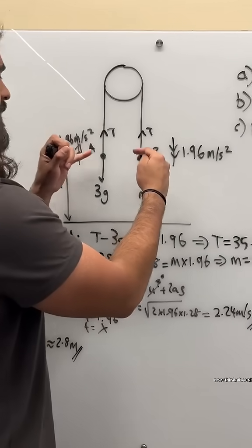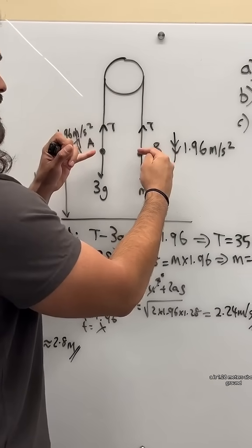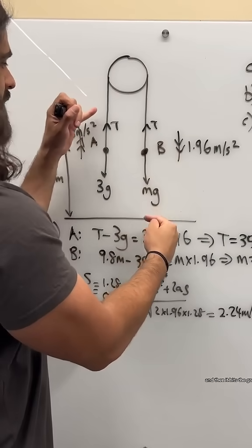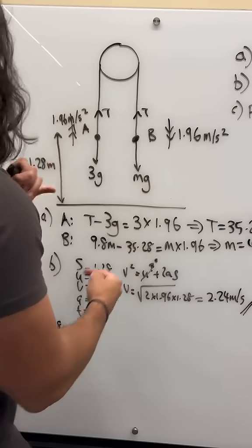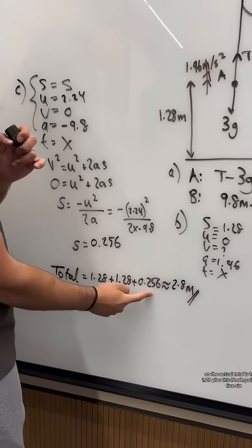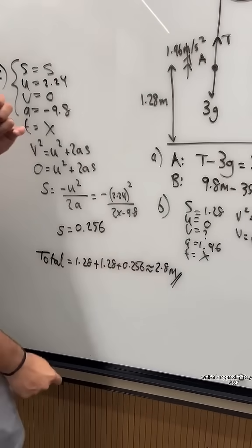All right, so what's the actual total? Now think about it. A is 1.28 meters above ground, then it moves with B, and then it hits the ground. So it actually moves another 1.28, and then it does that 0.2. So the actual total is 1.28 plus 1.28 plus this 0.256, which is approximately 2.8 to 2 significant figures.